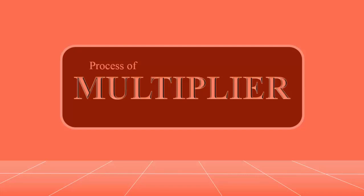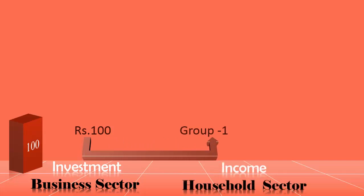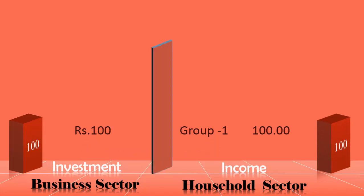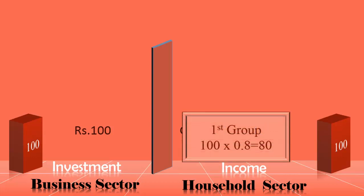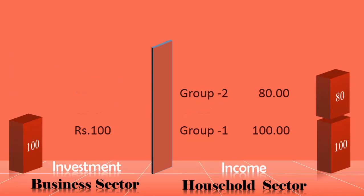Now the process of Multiplier. The business sector invests 100 crores. It goes as income to the first group of people in the household sector. In the first round, the net increase in income is 100 crores. The marginal propensity to consume is 0.8, meaning the group spends 80% of newly created income. Now, 80 crores is the income of the second group.